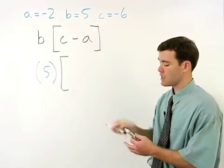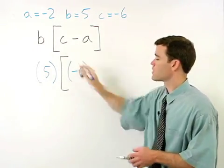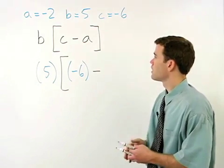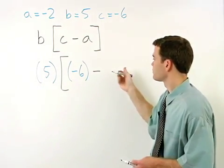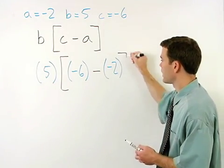c is negative 6, so we plug in a negative 6 for c. Bring down the minus. a is negative 2. Plug in a negative 2 for a. Bring down the bracket.